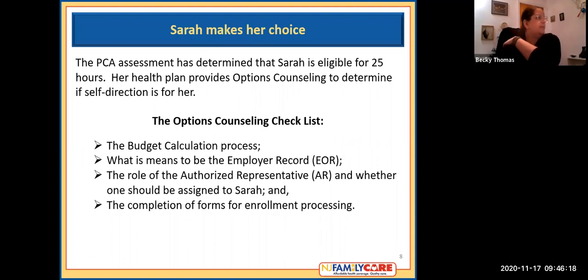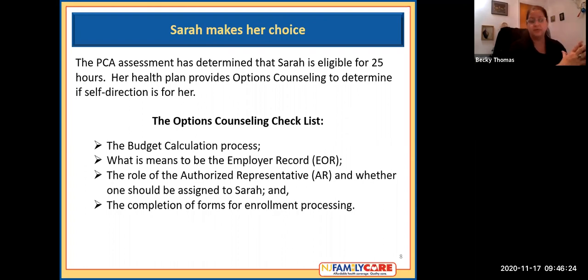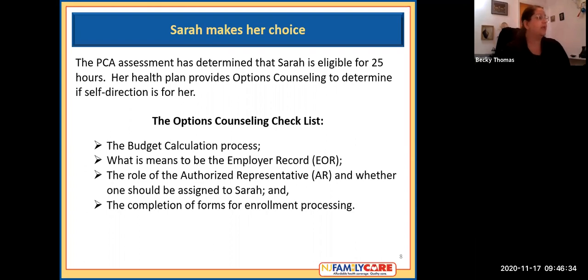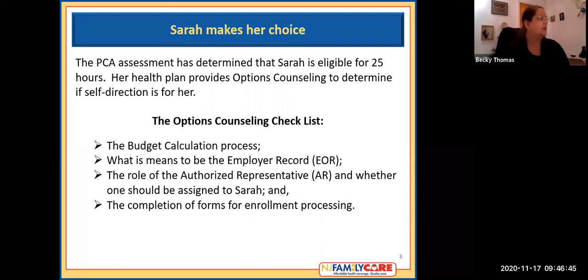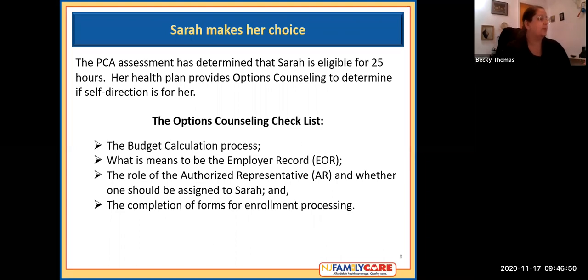Getting back to Sarah: the PCA assessment has determined that Sarah is eligible for 25 hours. Her health plan provides options counseling to determine if self-direction is right for her. Part of the options counseling checklist includes the budget calculation process, understanding what it means to be an employer of record, the role of the authorized representative and whether one should be assigned to Sarah, and the completion of forms and enrollment processing.